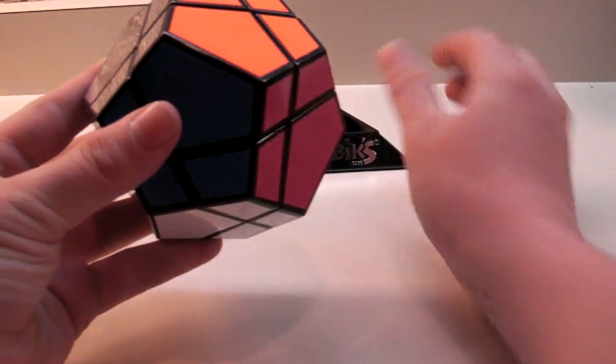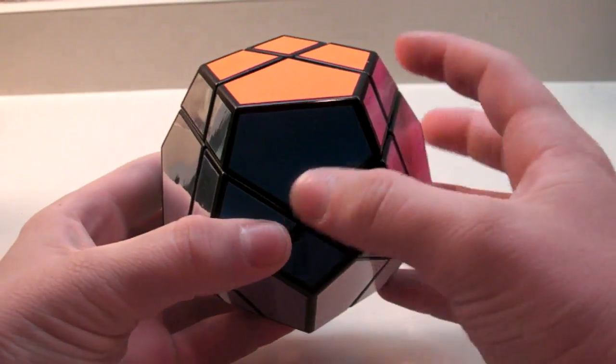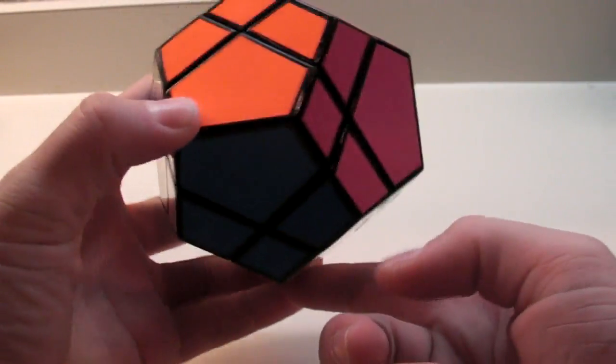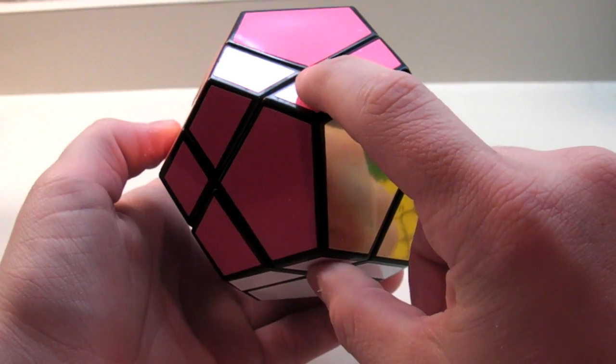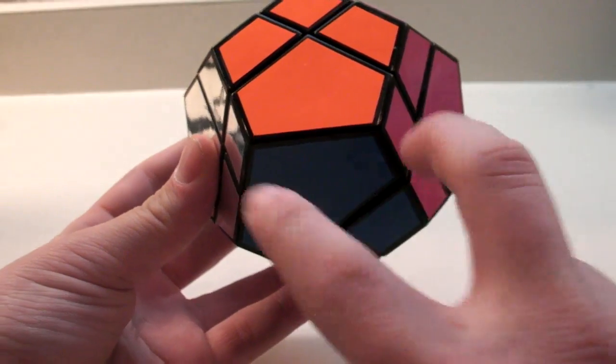So starting with the Skewb Ultimate, you just use the normal 3x3 notation, except when you're holding it with one side on the bottom, you can either be holding it like this, with the two small ones of the center, top and bottom, or the two small ones left and right.